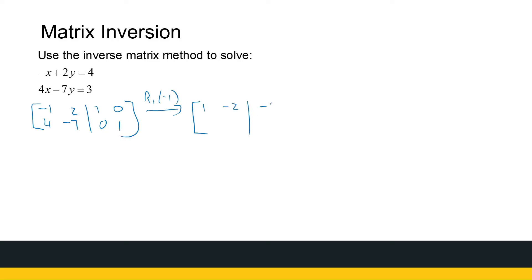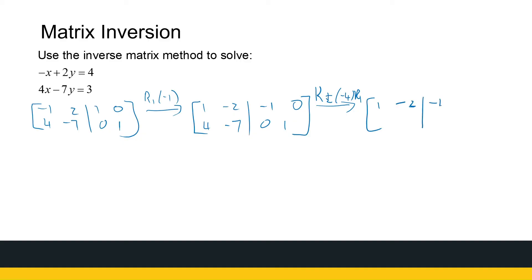After multiplying row one by minus one, we get: one, minus two, minus one, zero. The second row stays the same: four, minus seven, zero, one. Then to get a zero underneath the leading one, we take row two plus minus four times row one. Row one stays the same, and row two becomes: zero, one — since minus two times minus four is eight, and minus seven plus eight gives one — then four and one.